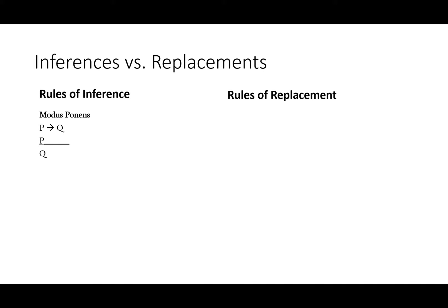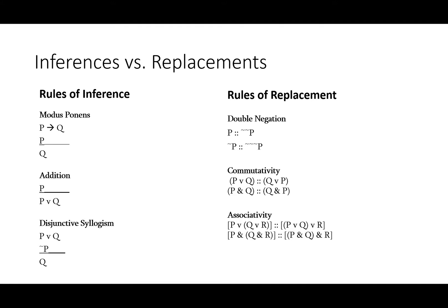Some familiar rules of inference include modus ponens, addition, and disjunctive syllogism. Some relatively simple rules of replacement include double negation, commutativity, and associativity.